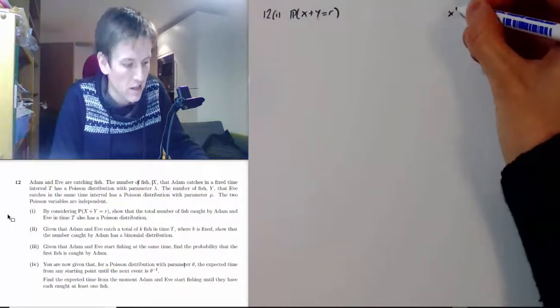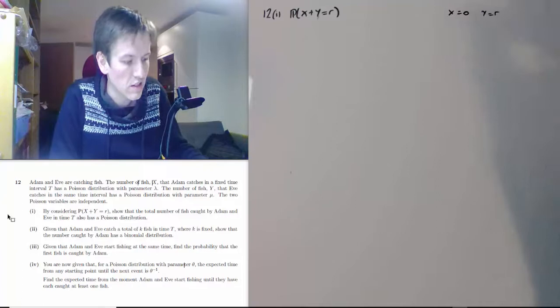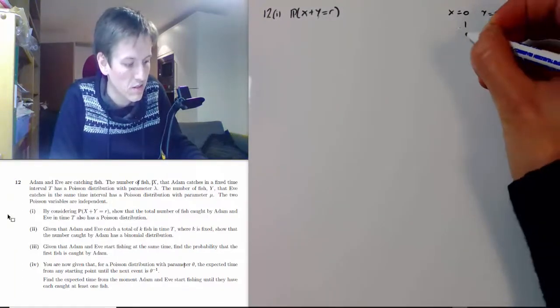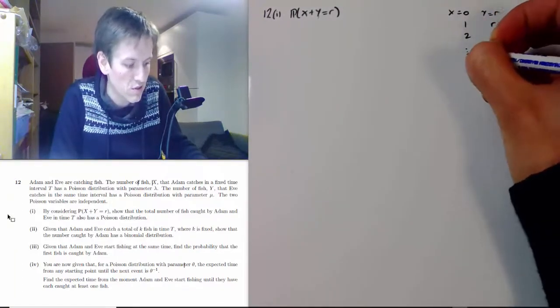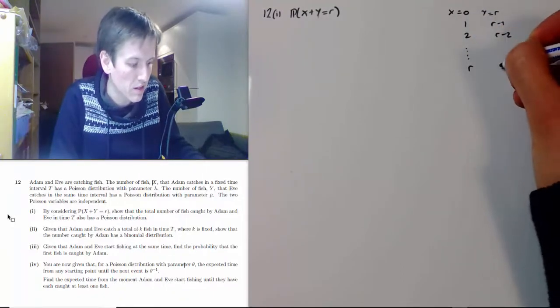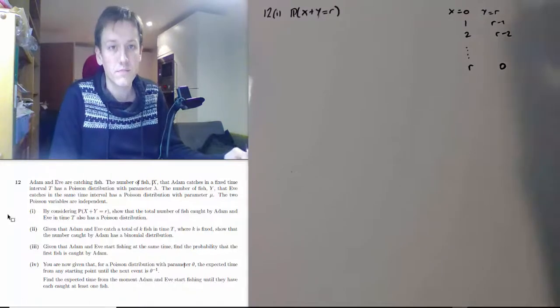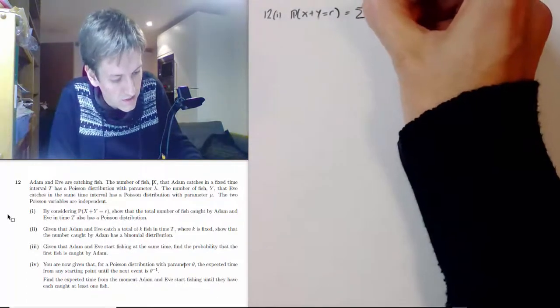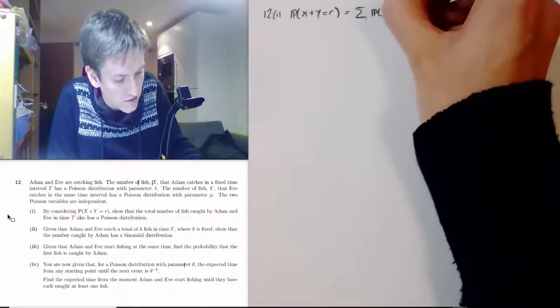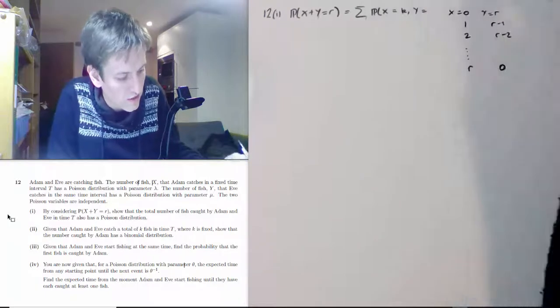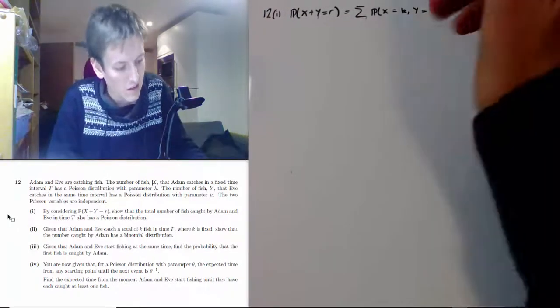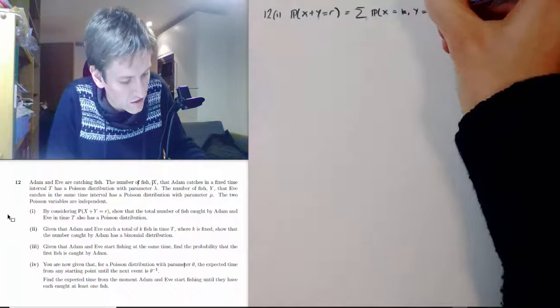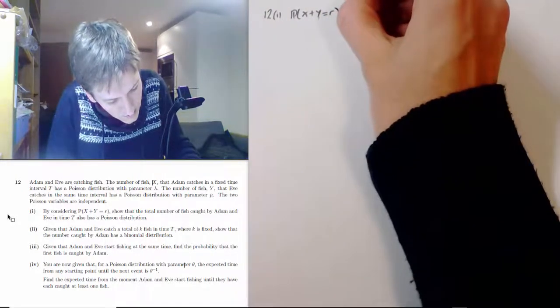We could have X equals 0 and Y equals r, or X equals 1 and Y equals r minus 1, then 2 and r minus 2, all the way up to X equals r and Y equals 0. So we need to sum the probabilities of all these different possibilities: the probability that X equals k and Y equals r minus k, summing from k equals 0 to r.